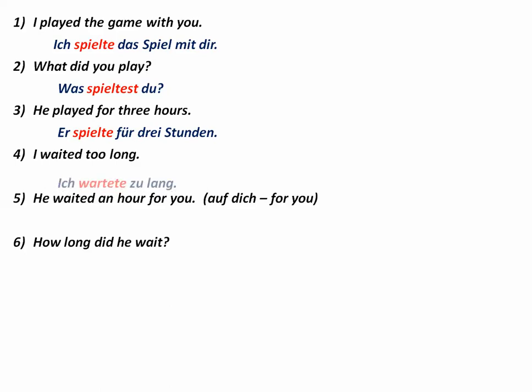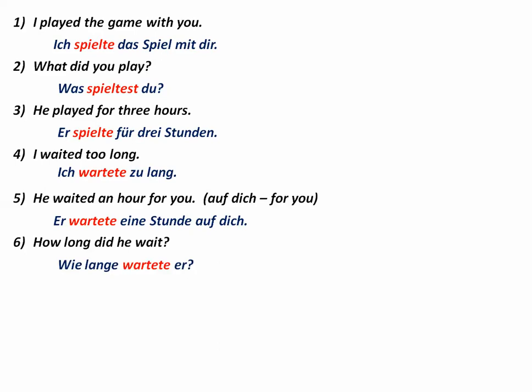I waited too long — Ich wartete zu lang. You may see that written, though spoken you would more likely hear: Ich habe zu lang gewartet. He waited an hour for you — Er wartete eine Stunde auf dich. Note: in German you use auf dich rather than für dich; Er hat eine Stunde für dich gewartet would not be correct. How long did he wait? Wie lange wartete er? Or in the perfect: Wie lange hat er gewartet?